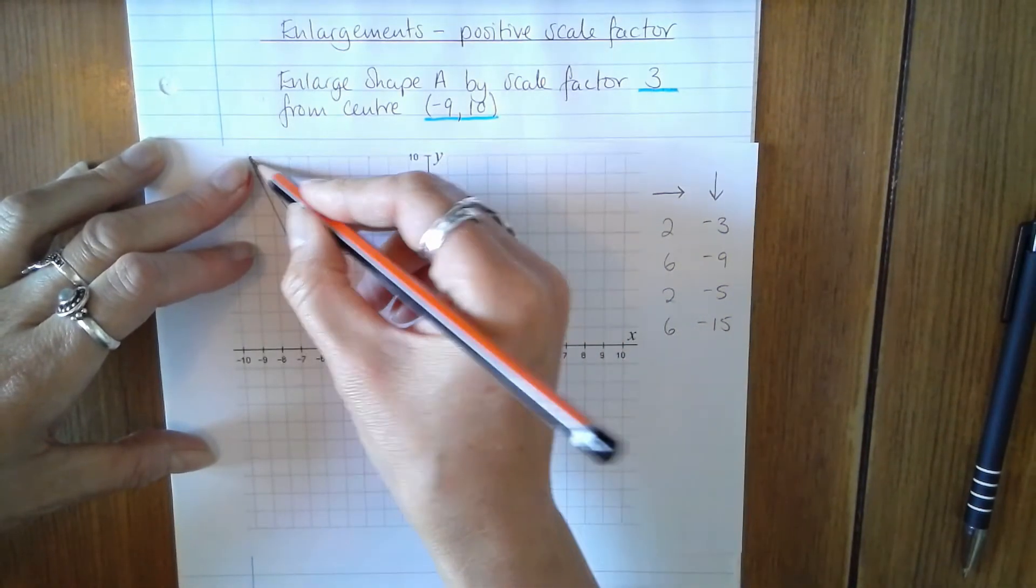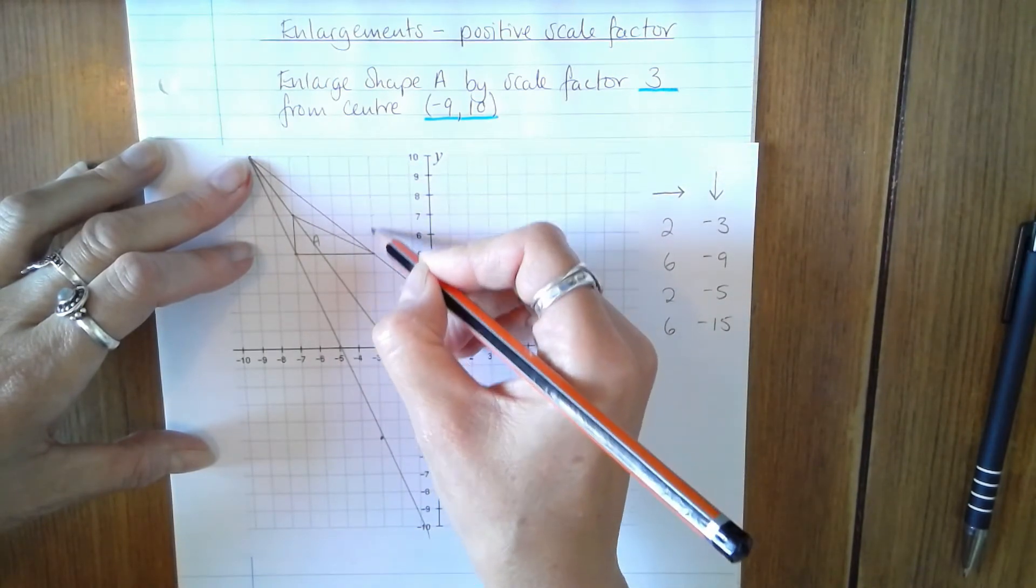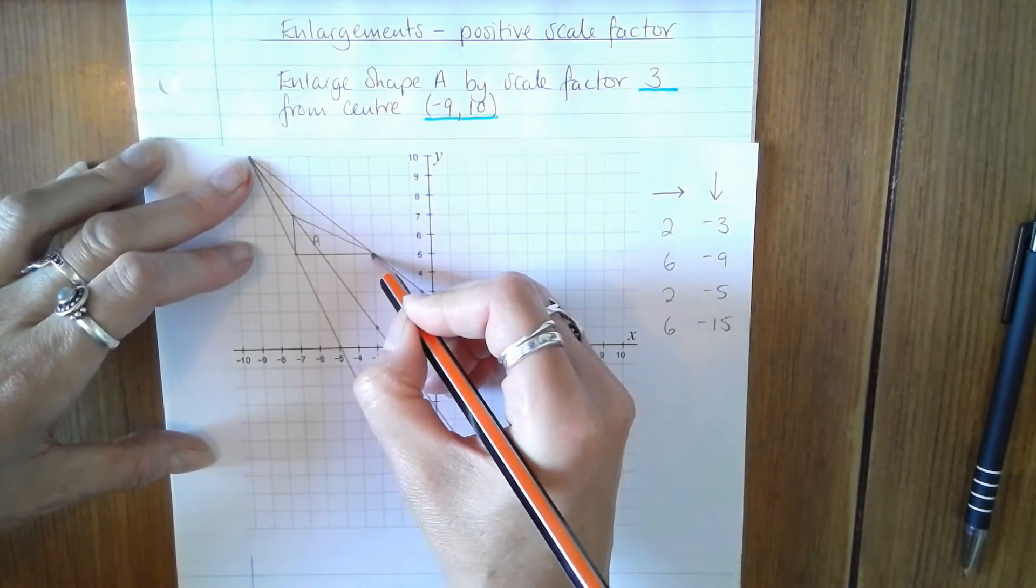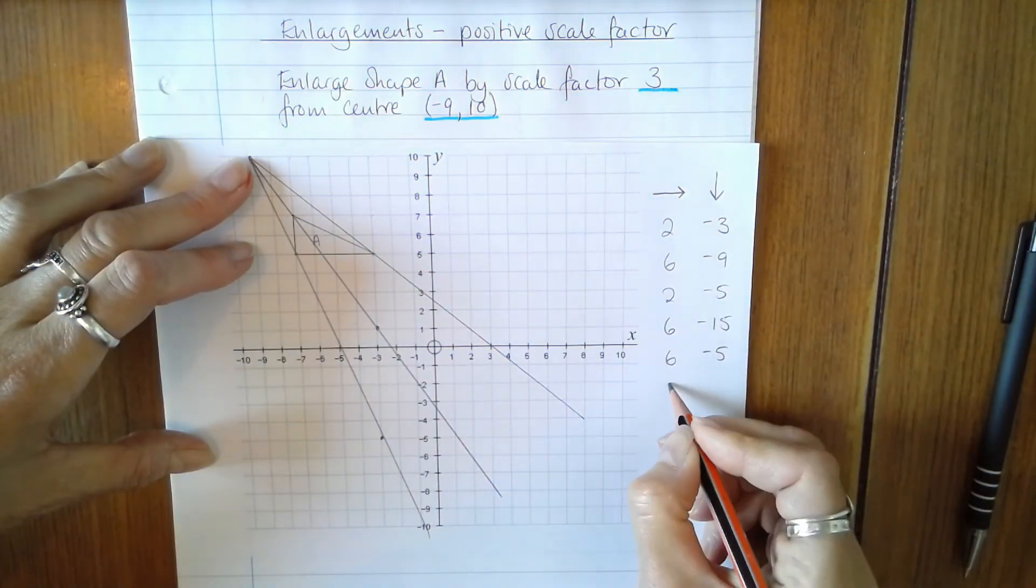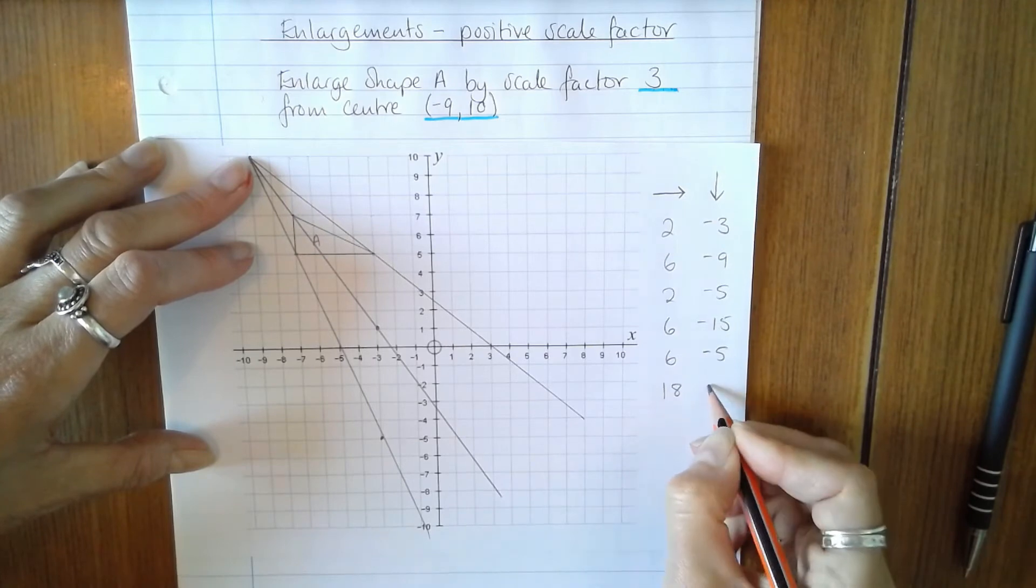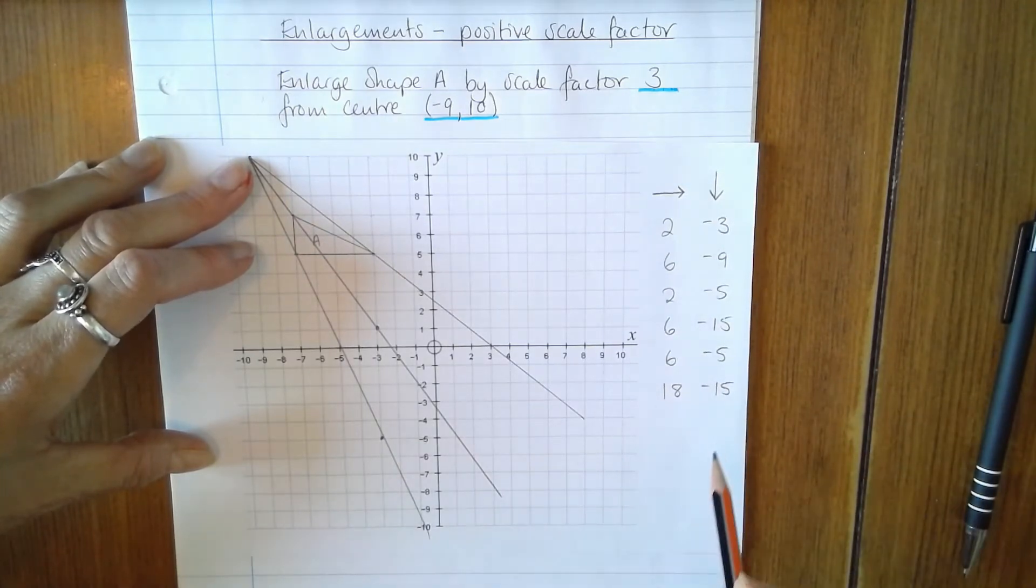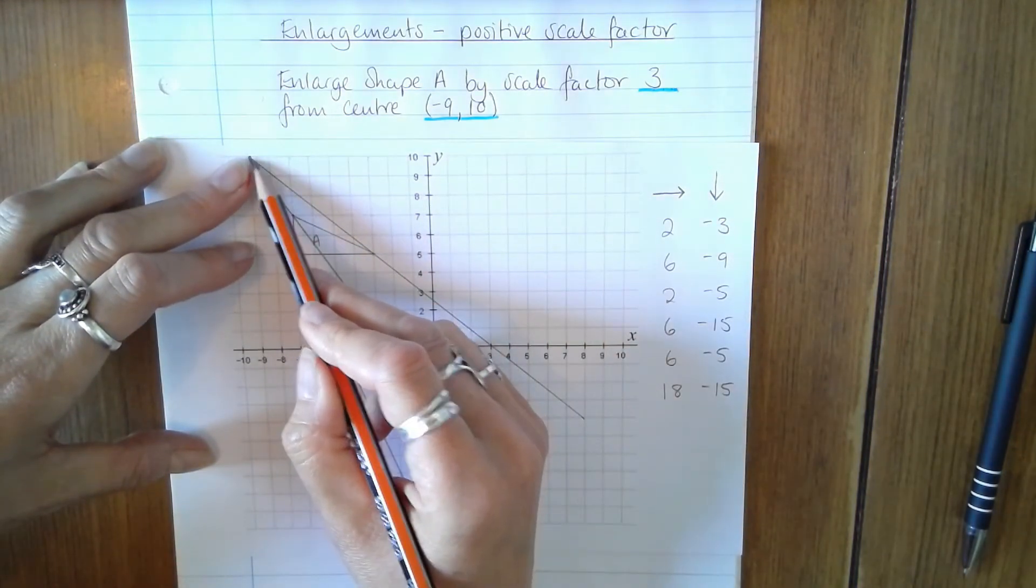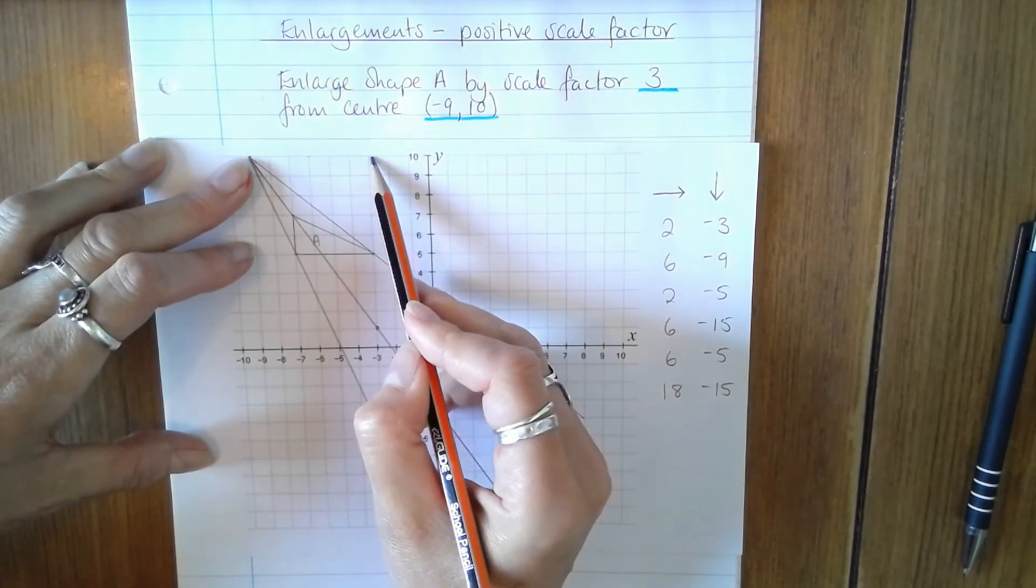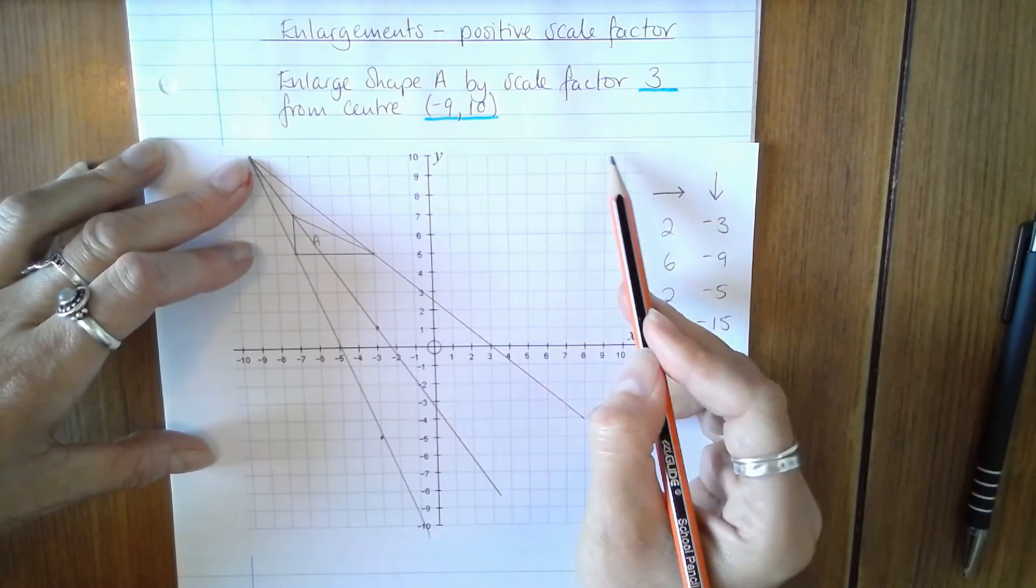And the last vertex here is six across and one, two, three, four, five down. Six across and five down when we multiply by three becomes 18 across and 15 down. So you can now see we might want to look back after we've counted, so 18 across, three, six, nine, twelve, fifteen, eighteen.